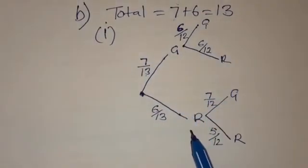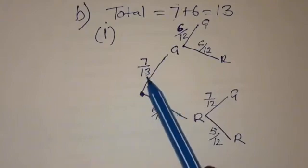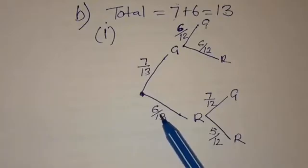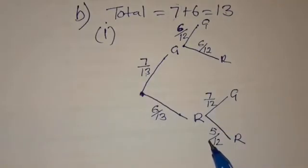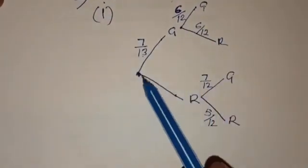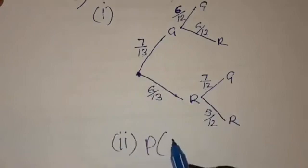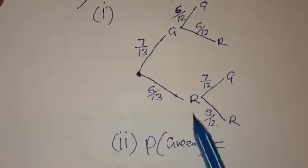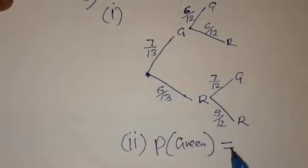This is the tree diagram required. To verify it is correct, when you add the probabilities on each pair of branches they should sum to 1: 7/13 plus 6/13 equals 1, and each second-pick pair should also sum to 1. The second part asks: what is the probability that the first apple eaten was green? Since we want the first pick, that probability is taken directly from the first pick — green is 7 over 13.